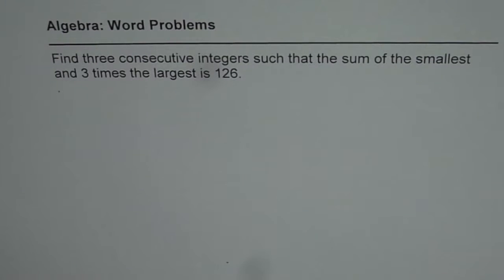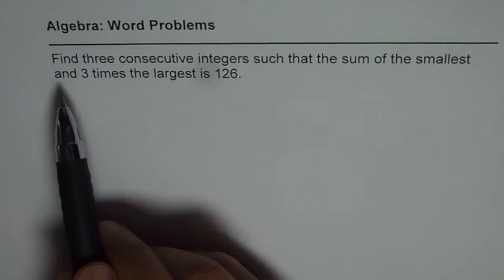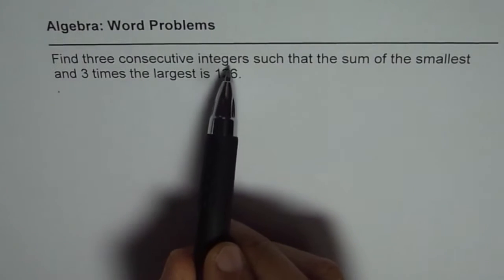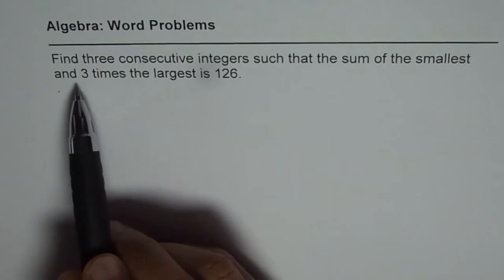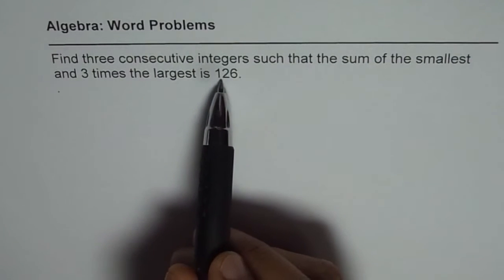I am Anil Kumar and in this video we will learn two techniques to solve a question. We will also learn and understand the term consecutive integers. The question is: find three consecutive integers such that the sum of the smallest and three times the largest is 126.